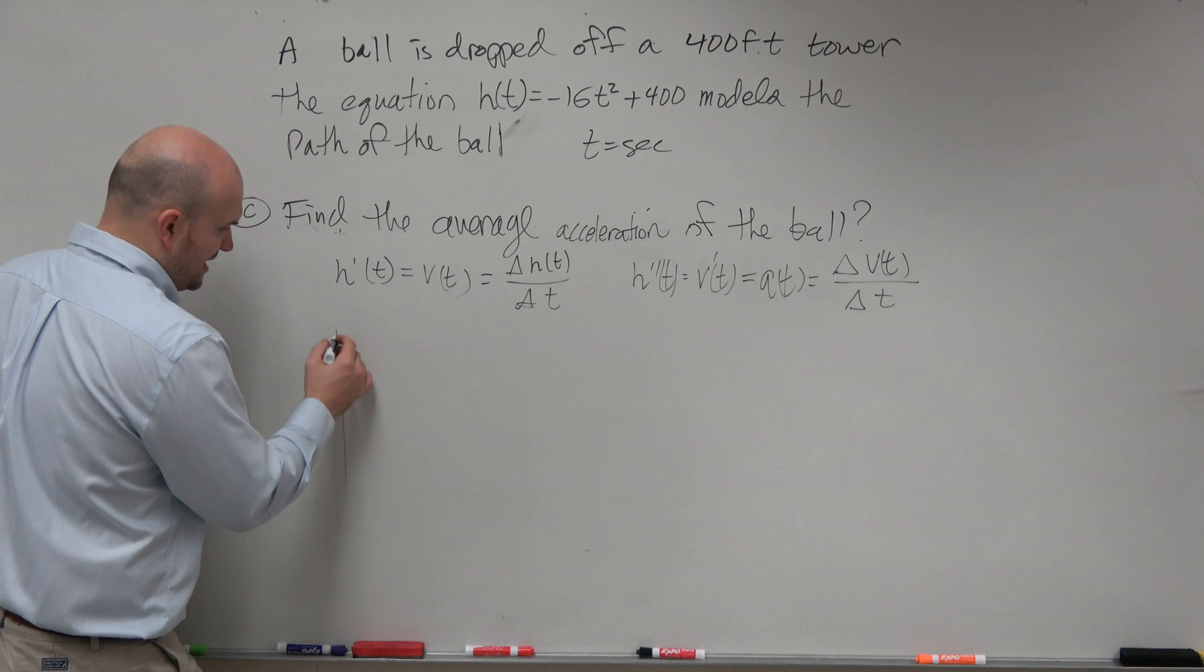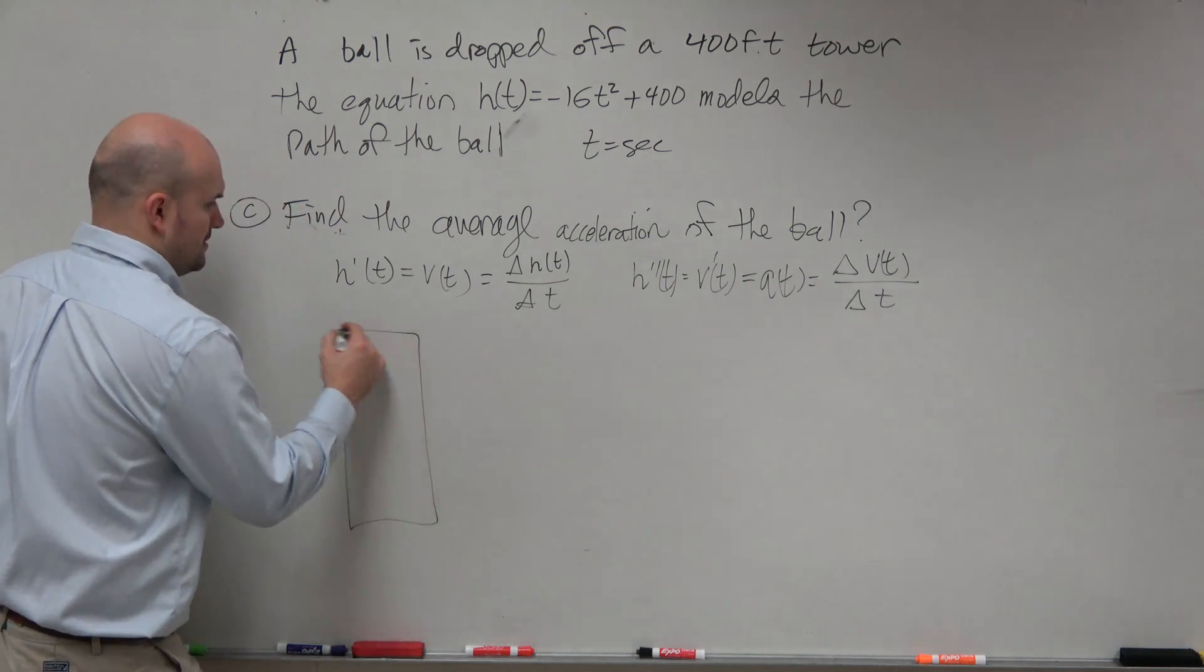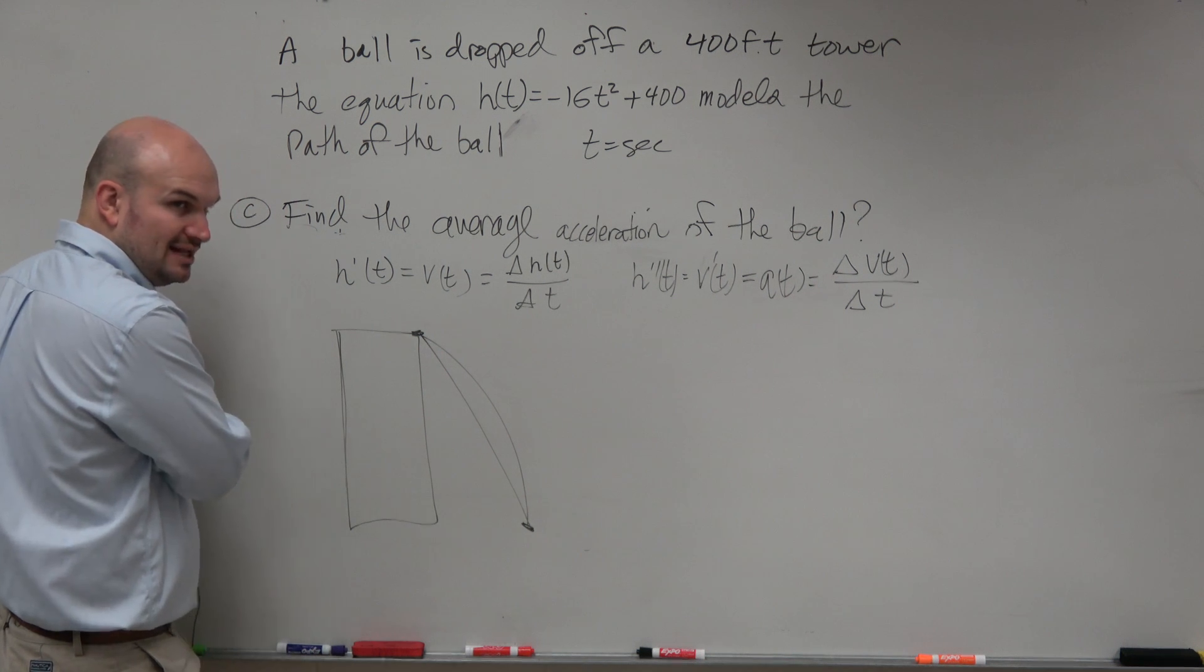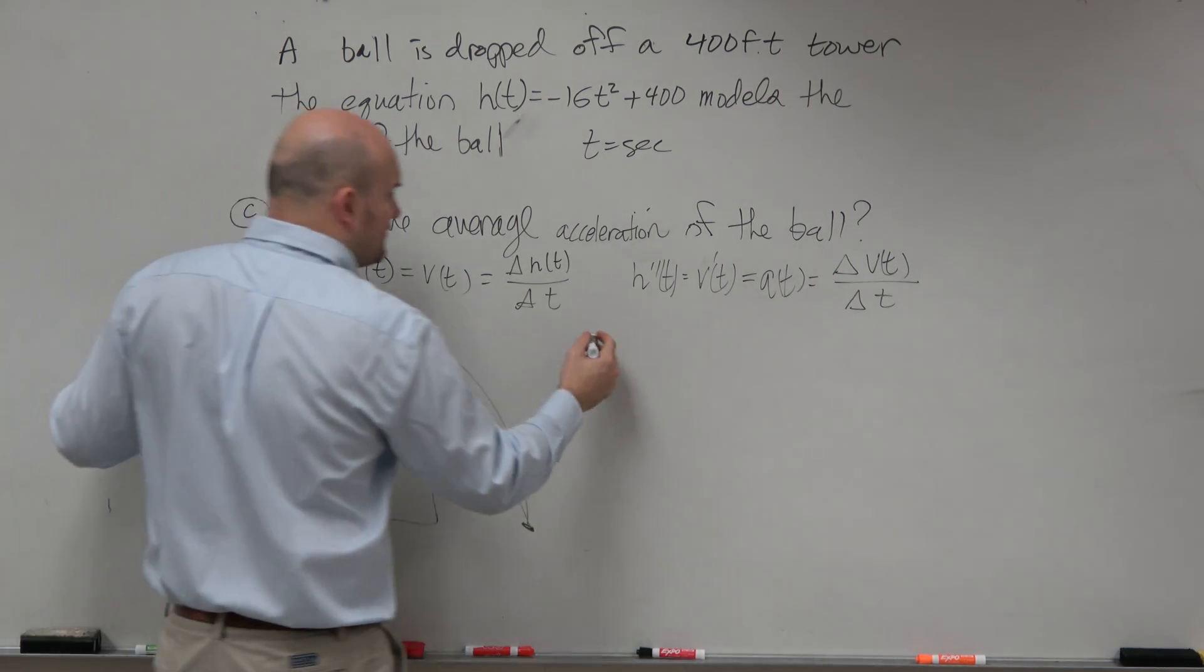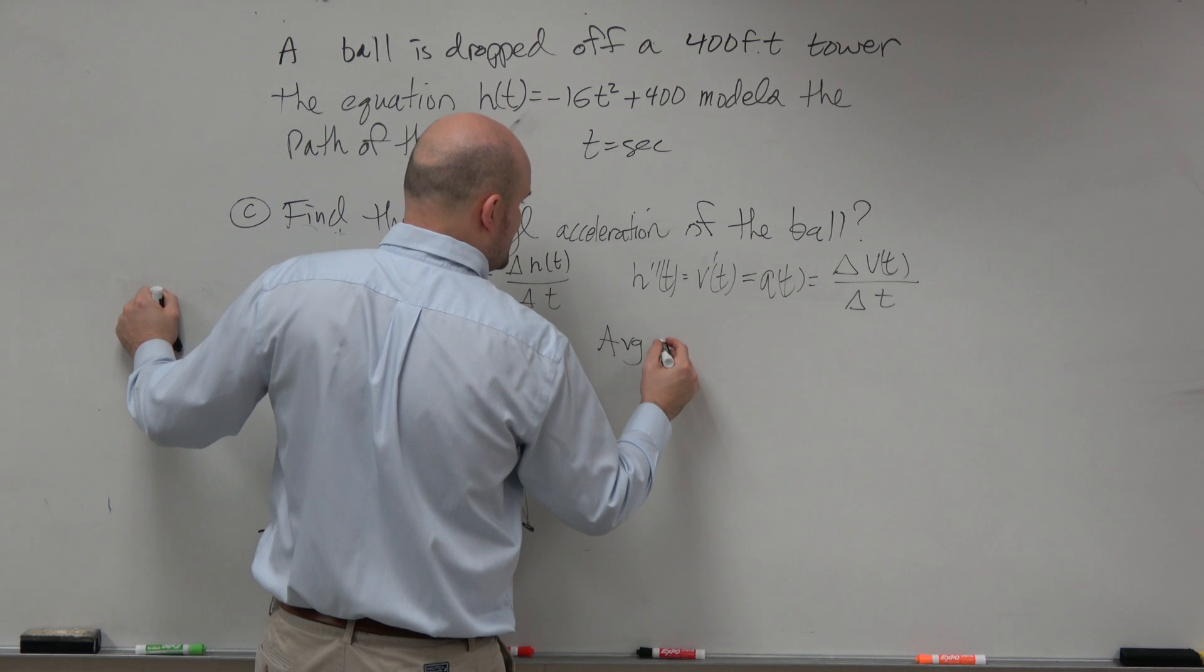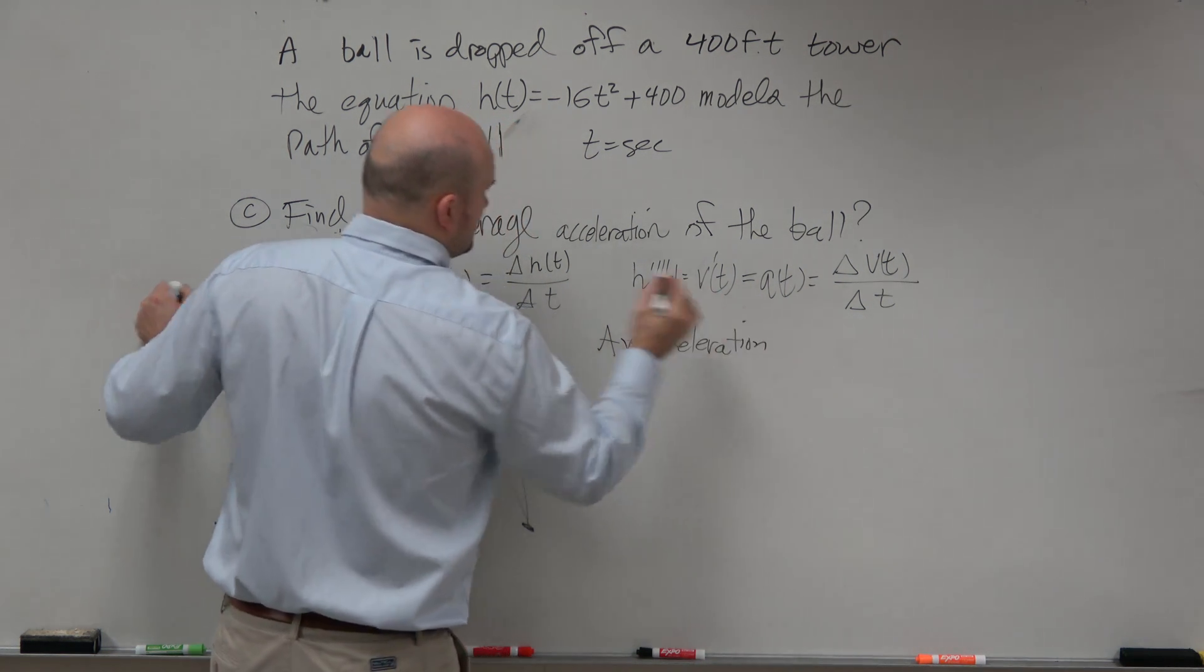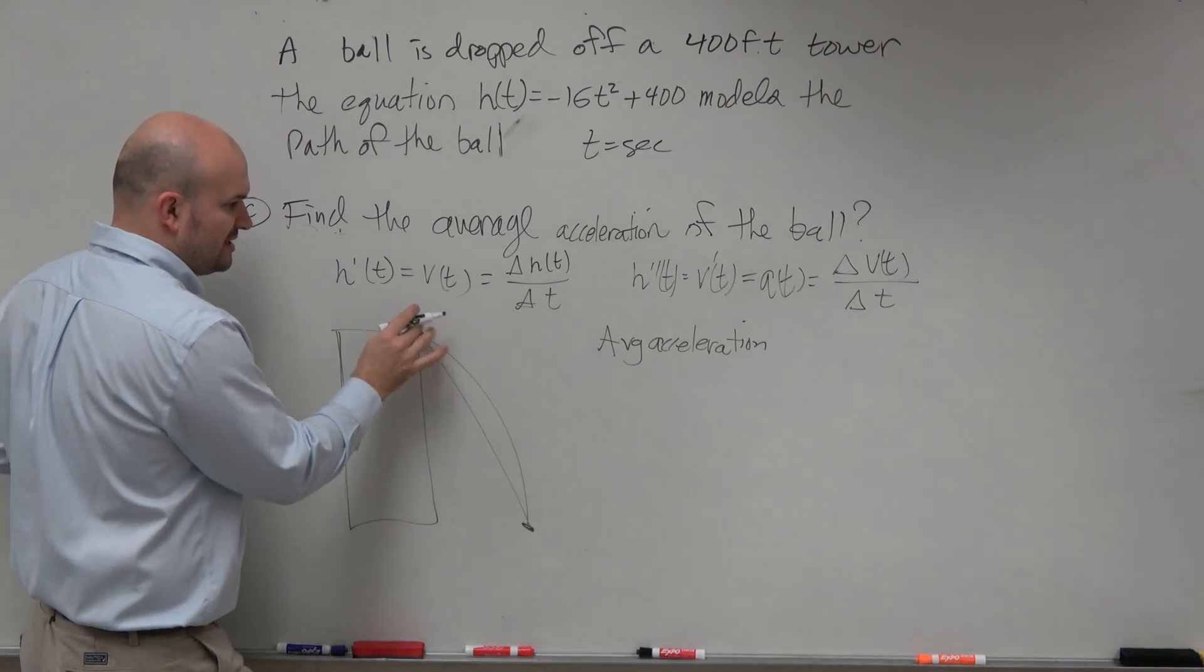If we look at this ball here, let's look at these two points. We're talking about a secant line for average acceleration: change in velocity over change in time. Let's look at these two points.